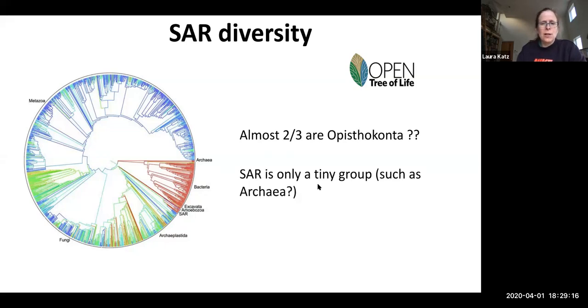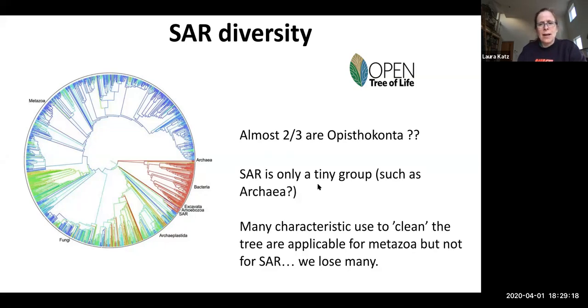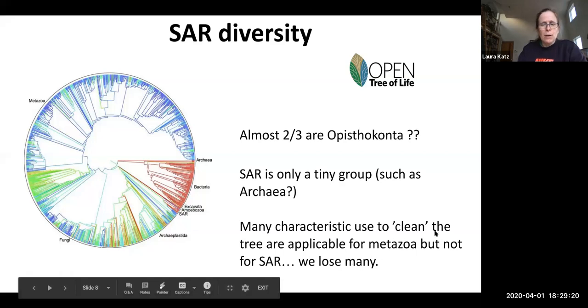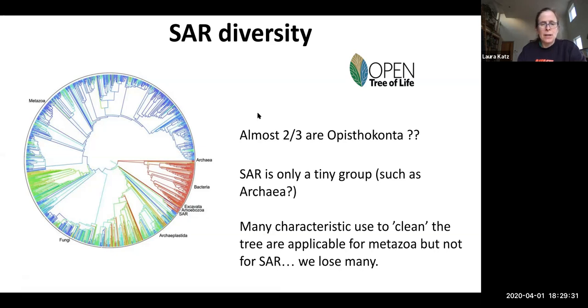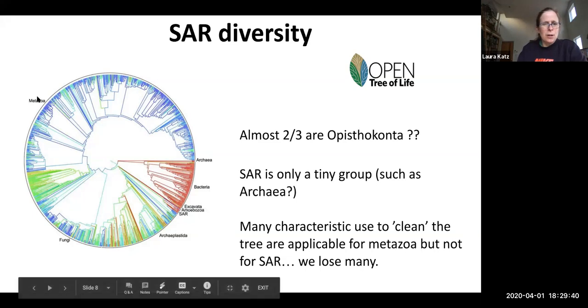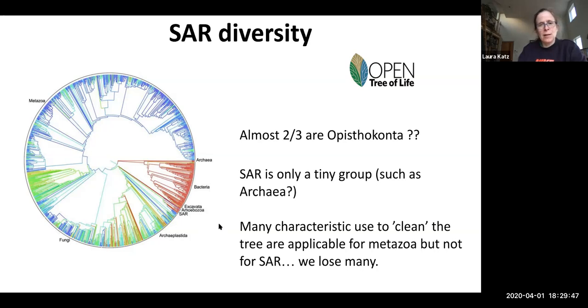You might ask, are two-thirds of eukaryotes opisthokonts? No. It's just that the criteria that they had here to clean were applicable only for animals, for metazoa—sorry, metazoa is another word for animals—but not for SAR. For example, to make it in this tree, you have to have molecular data and meet some level of criteria for the quality of data. We wanted to address this. This says most eukaryotes are plants, animals, and fungi.